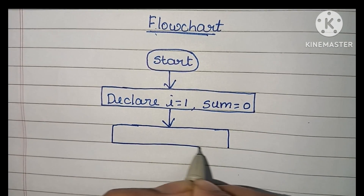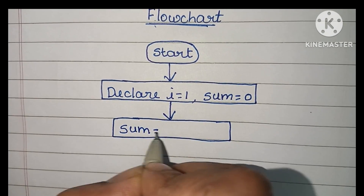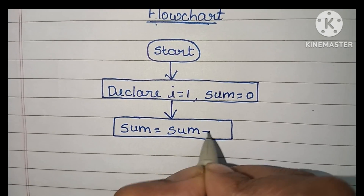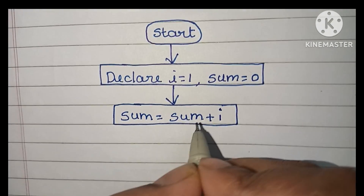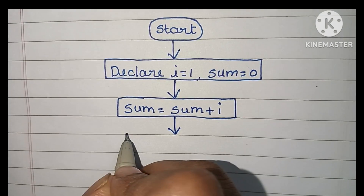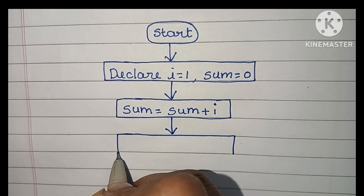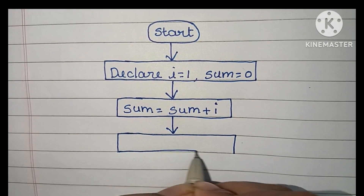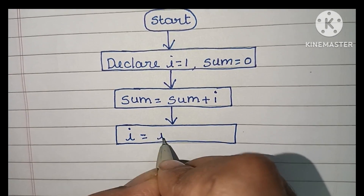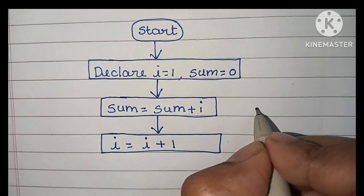Next we write the process step, which is also written within a rectangular shape. Inside it we write: sum = sum + i. Then we increase the value of i by 1, that is i = i + 1.